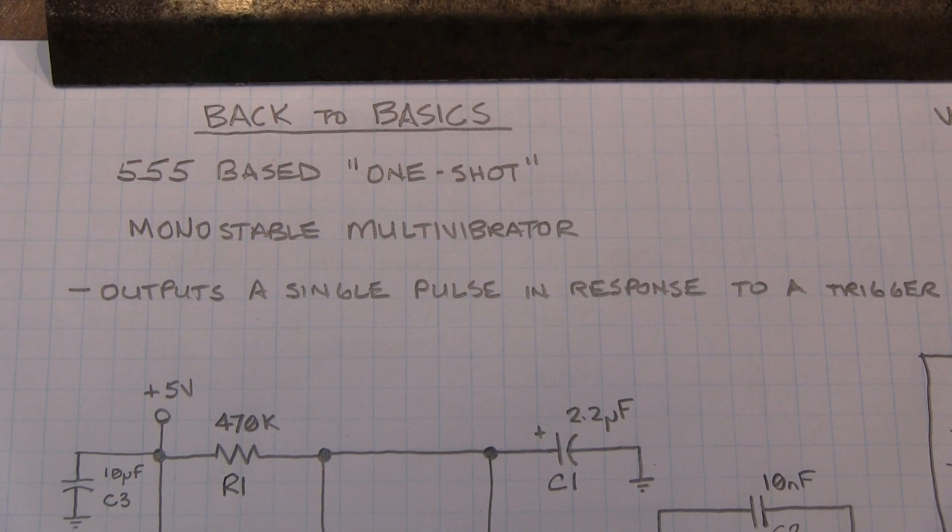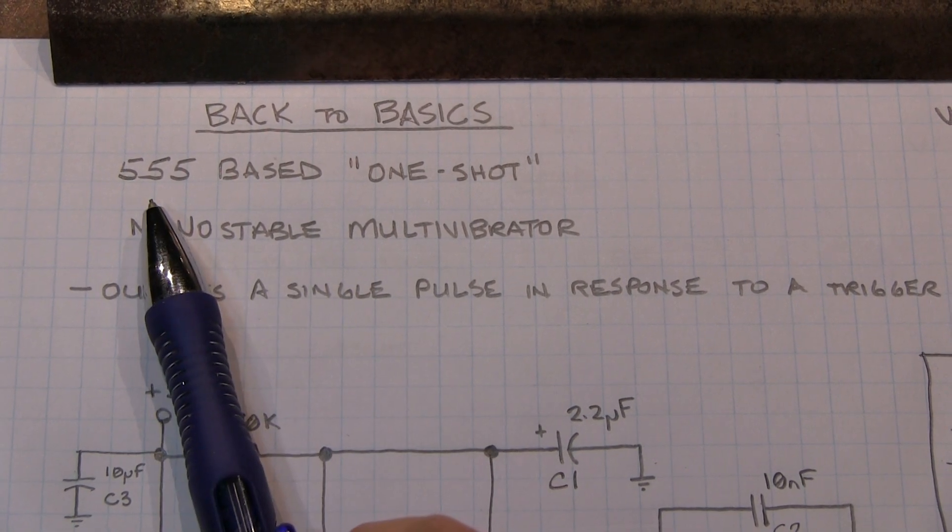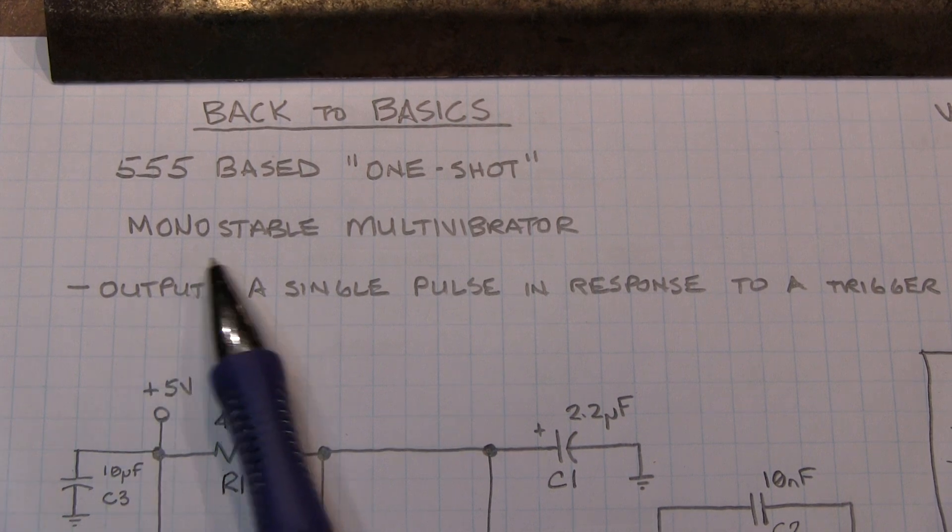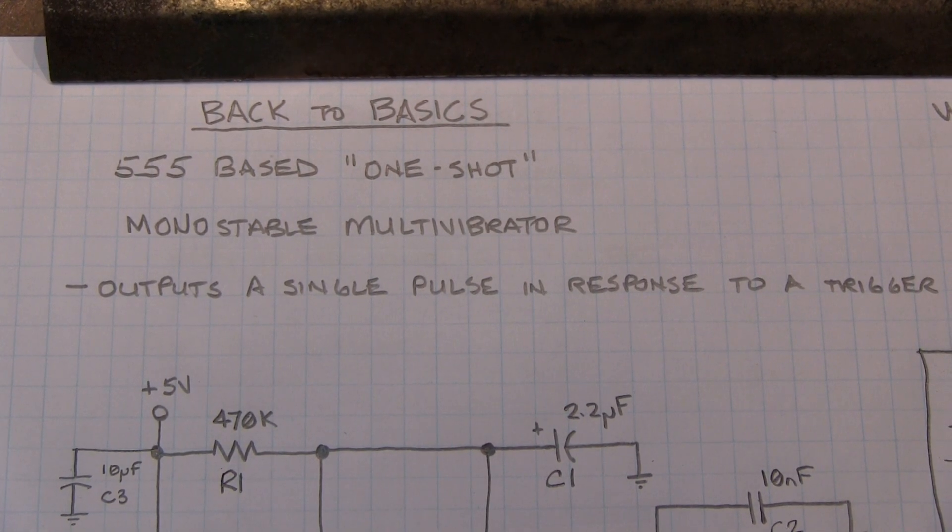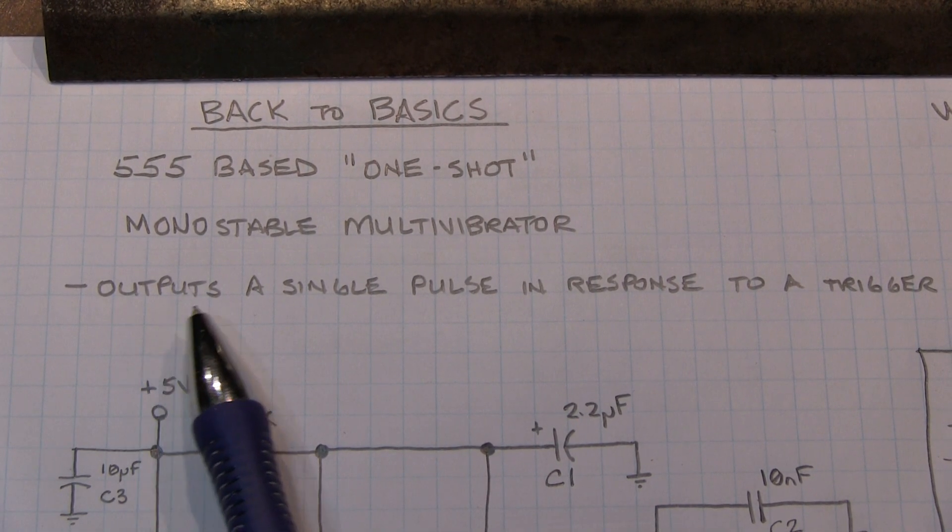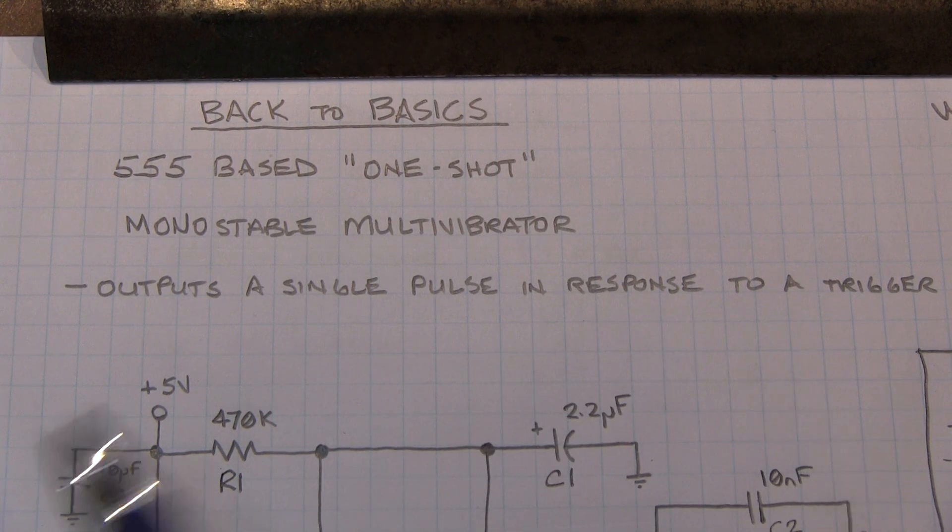We've got another back-to-basics topic today, this time a 555-based one-shot, or monostable multivibrator. That's quite simply a circuit that outputs a single pulse in response to a trigger.